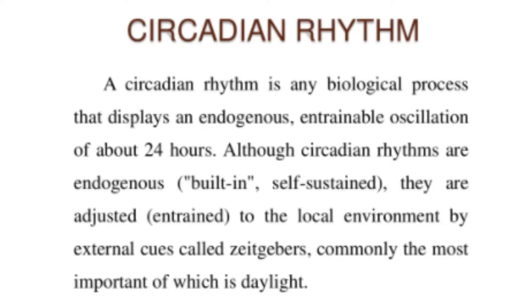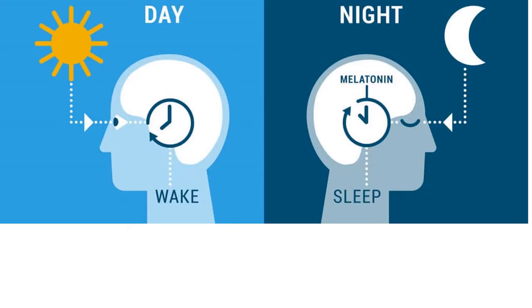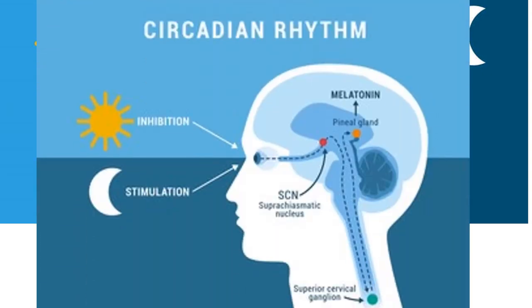they are adjusted and trained to the local environment by external cues called zeitgebers, the most important of which is daylight. We are awake because our internal clock responds to sunlight, and we are asleep when our internal clock responds to darkness and there is secretion of melatonin. Our circadian rhythm is entrained with the sunlight and darkness cycles, and it is located in the suprachiasmatic nucleus in the hypothalamus, which sends signals and triggers secretion of melatonin from the pineal gland.